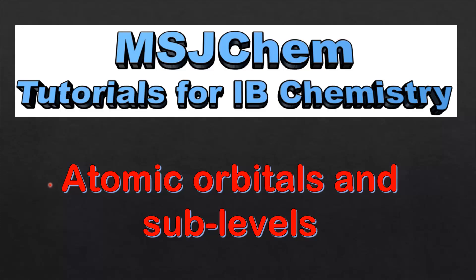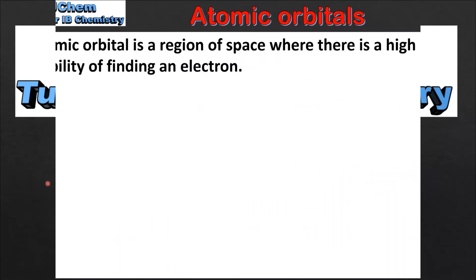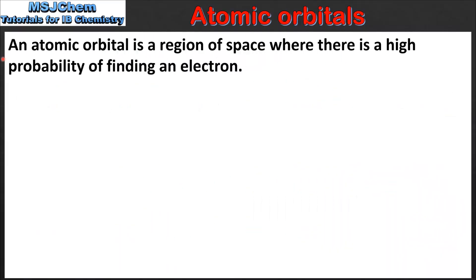This is MSJChem. In this video I'll be taking a quick look at atomic orbitals and sublevels. We'll start by looking at the shapes of S orbitals and P orbitals.